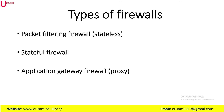The next type is the application gateway firewall, also known as a proxy firewall or application layer firewall. This firewall filters traffic at Layers 3, 4, 5, and 7 of the OSI reference model. When a client needs to access a remote server, it connects to a proxy server, which then connects to the remote server on behalf of the client. Therefore, the remote server only sees the connection coming from the proxy server.